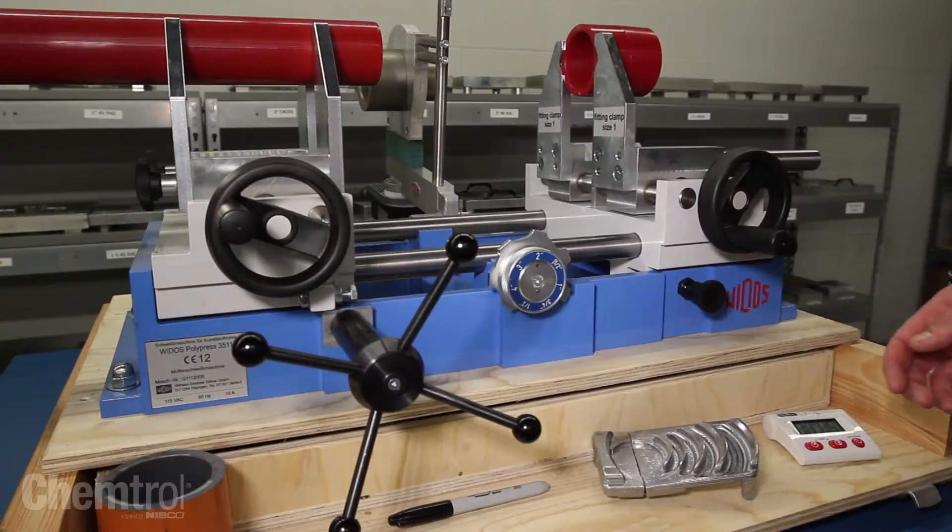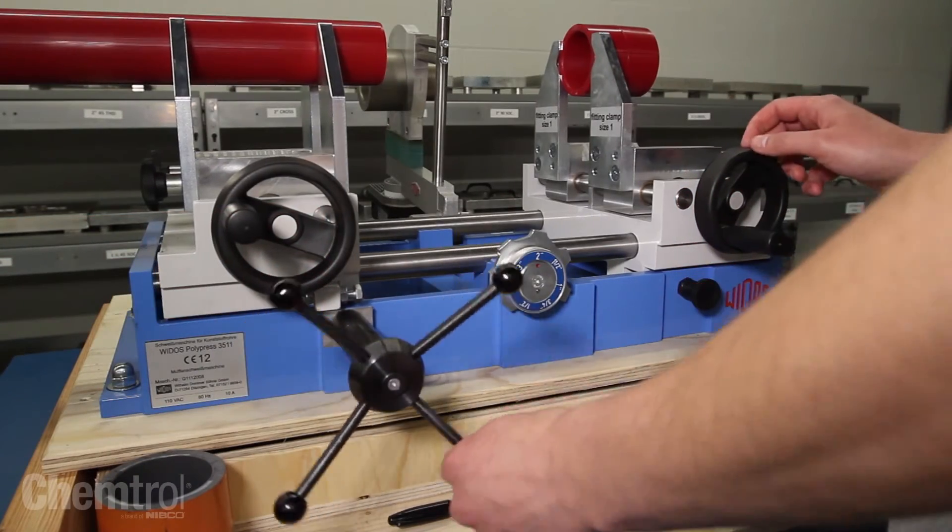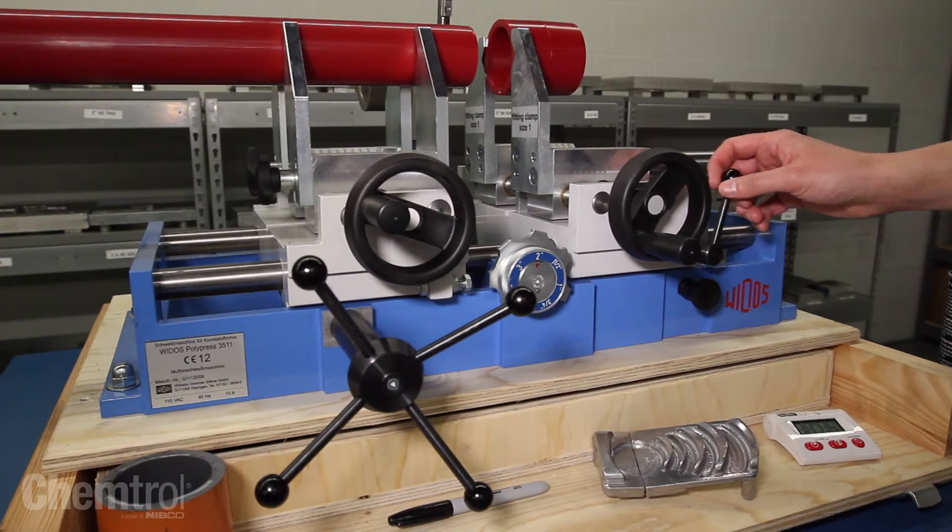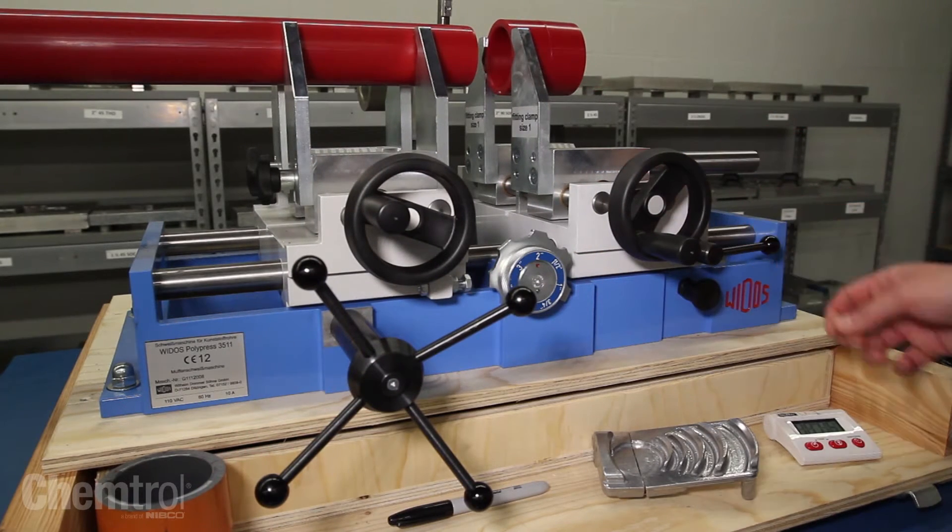To set the zero position for the pipe, twist and release the knob on the fitting side of the machine and turn the hand wheel clockwise until the sled stops. Lock the set screw.